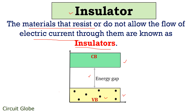We have seen that in conductors the conduction band and valence band were overlapping each other, while in semiconductors a small band gap existed between these two bands. But here in an insulator, a sufficiently large band gap exists between these two bands. Therefore, even when external temperature is provided, the electrons in the valence band do not move to the conduction band, and thus no flow of electric current takes place through such materials.